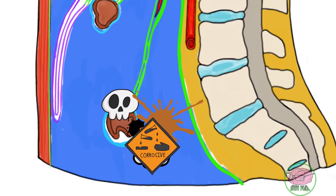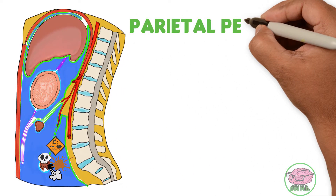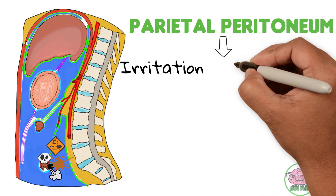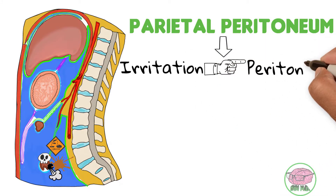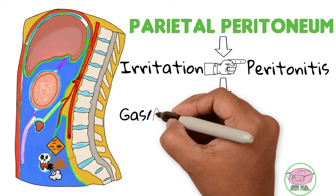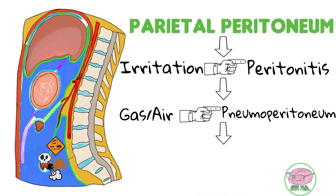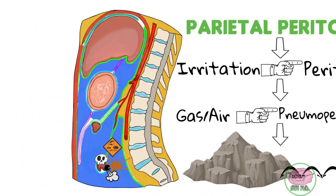These contents act as a corrosive on the parietal peritoneum, causing its irritation and inflammation known as peritonitis. The gas leaked from the perforation also leads to the pneumoperitoneum found in our patient, causing the peritoneal signs of rigidity and Blumberg.